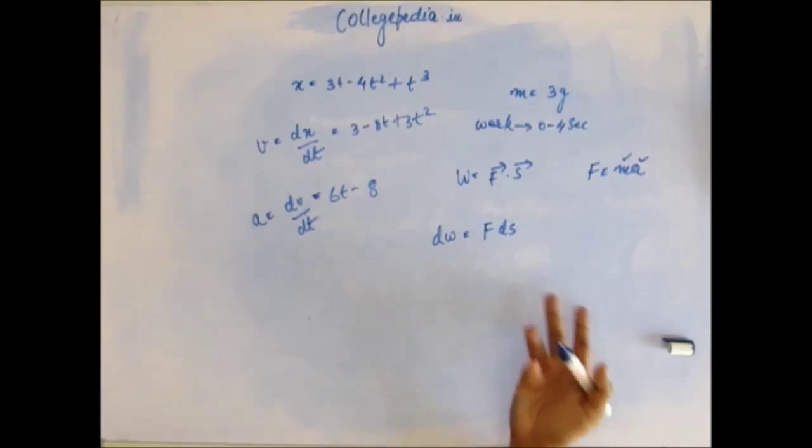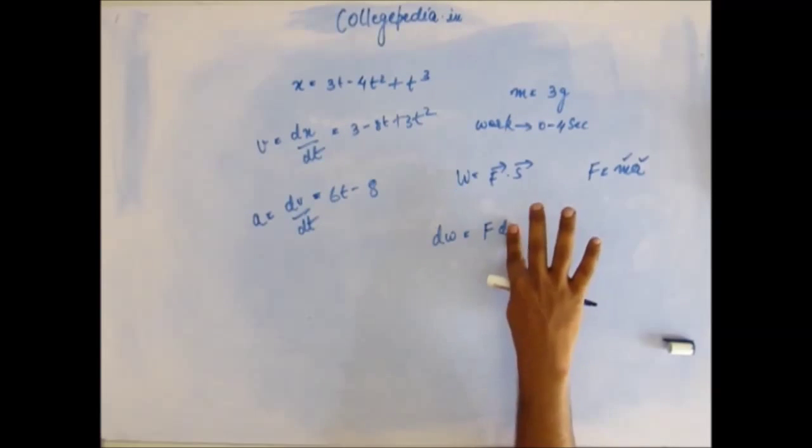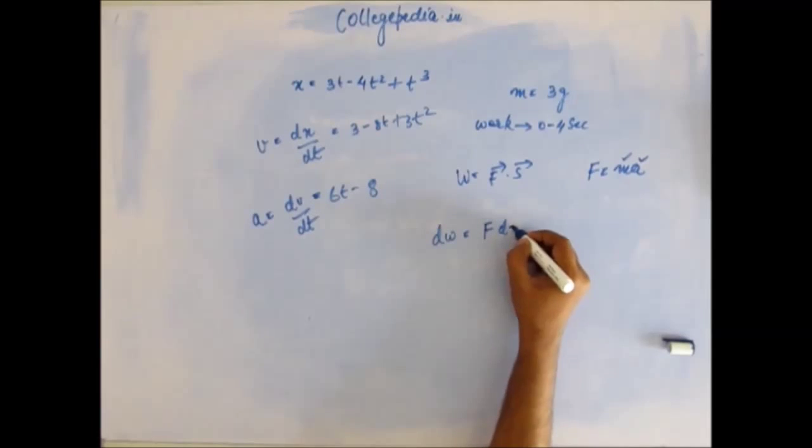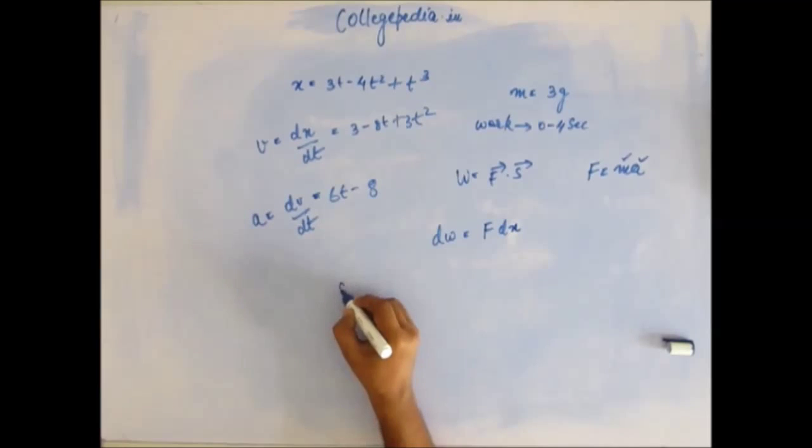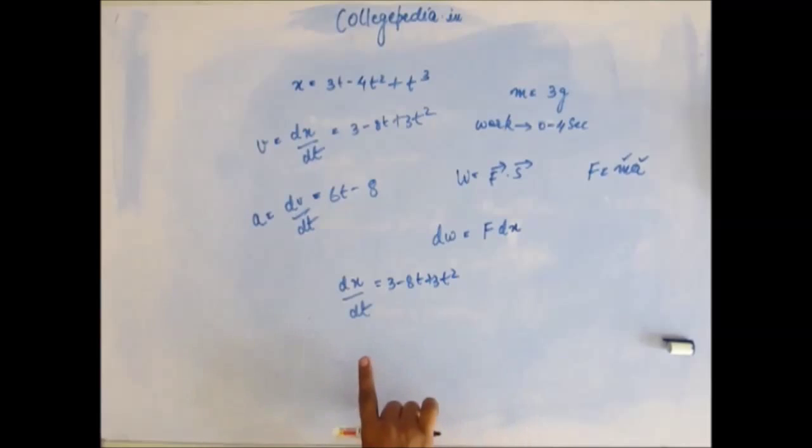In this case also, we will write work done at any intermediary stage. For example, work done at any time t is force into small displacement during that small time period. This is what the formula is: small work is force into small displacement. Now what is small displacement? dx is given here. X is given here and we have to find dx. We can write it as small work is force into small displacement, F into dx. Finding dx is easy. Actually, we find dx by dt. dx by dt is 3 minus 8t plus 3t squared, and from here you can use dx. dx is 3 minus 8t plus 3t squared into dt.